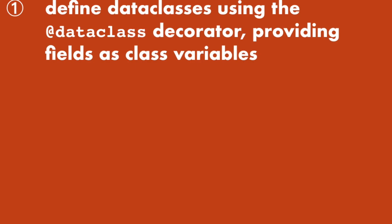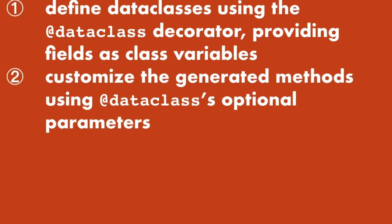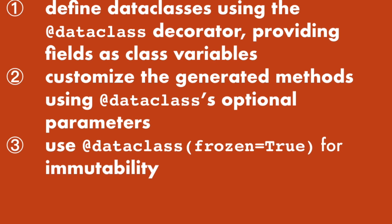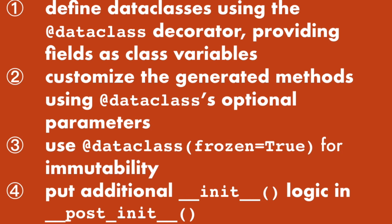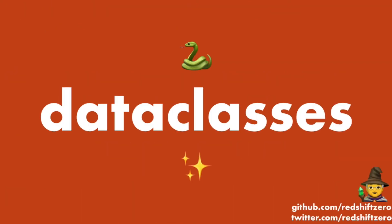In summary, we went through a whirlwind tour of data classes. We motivated when data classes can be used to reduce boilerplate code. We showed how to define them using the `dataclass` decorator, providing fields as class variables. We showed how to customize the generated methods using the decorator's optional parameters like `repr=True`. We also showed how to make immutable instances using `frozen=True`. And finally, we showed where to put custom init logic in `__post_init__`. I hope this was useful — thank you for watching.